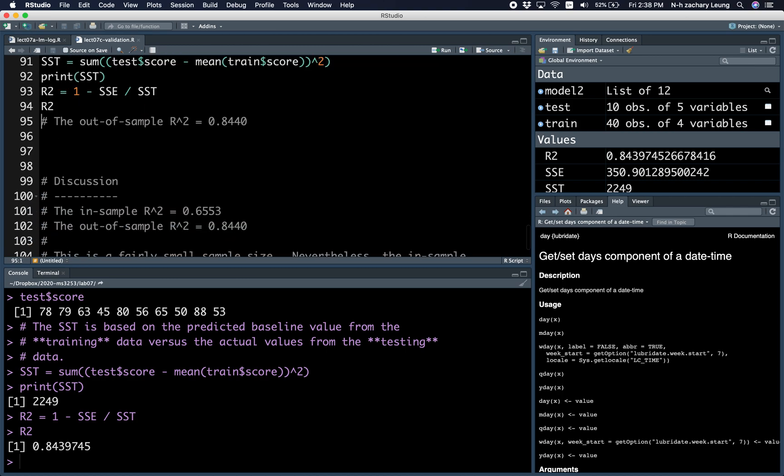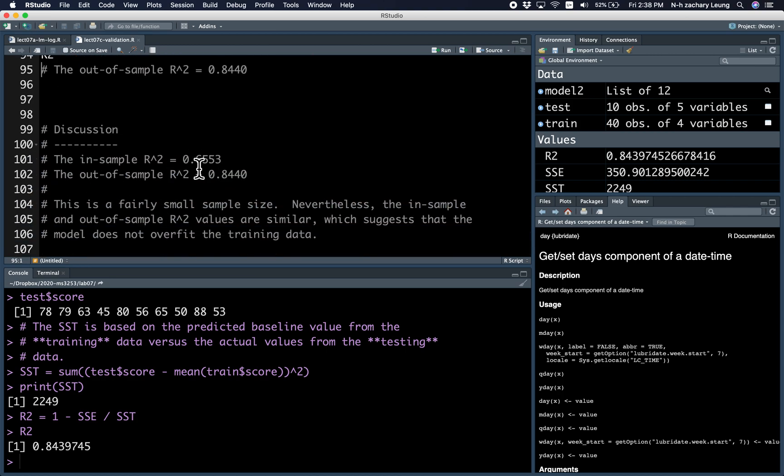All right. So in this case, we see the in-sample R-squared is 0.66. The out-of-sample R-squared is 0.84. So this is fairly similar, which suggests that overfitting is not happening. Of course, there's a caveat that the sample size is fairly small. The training set is 40 observations, and the testing set is only 10 observations. So ideally, we would like to have more data and a bigger training and testing set just to validate the model.